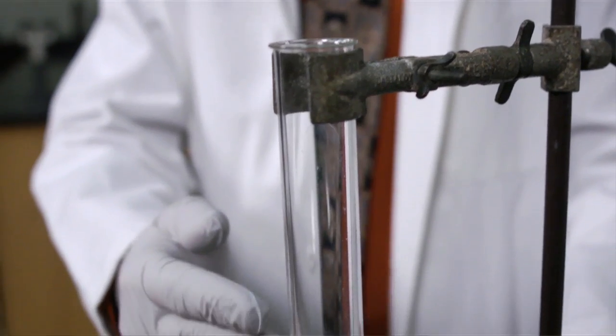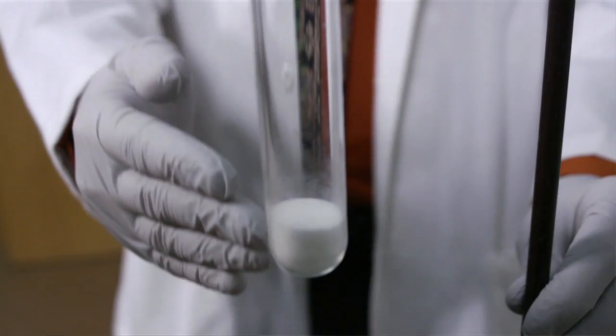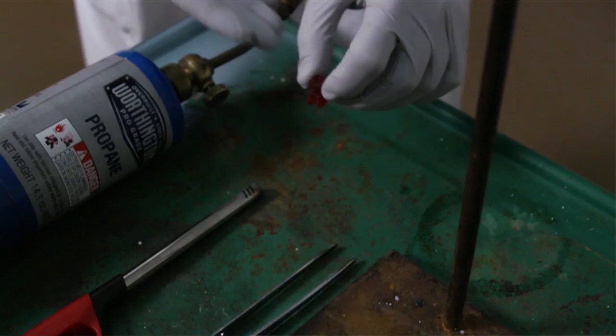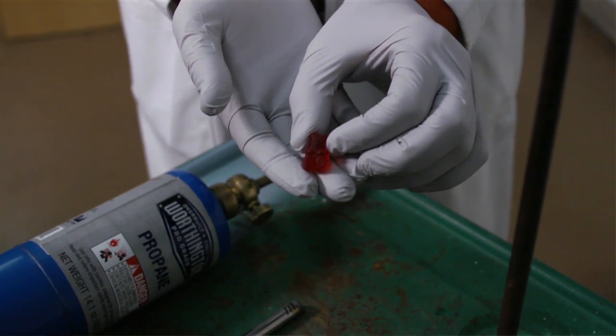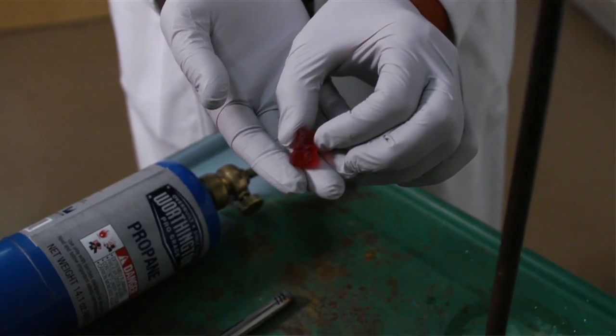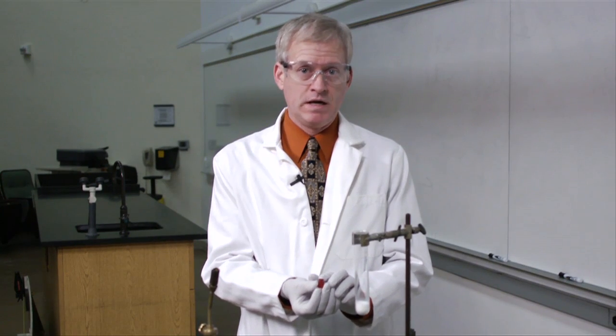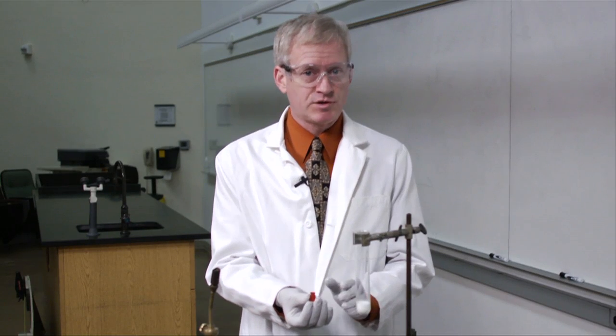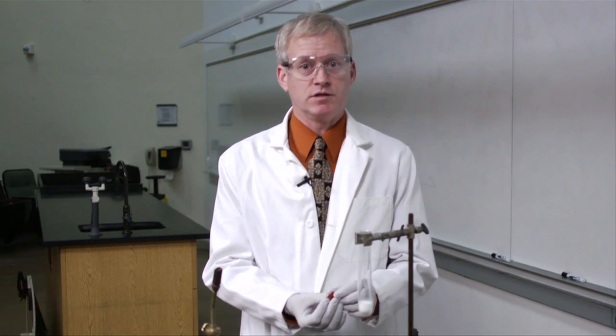In this test tube, I have some solid potassium chlorate, a strong oxidizing agent. And here, I have a gummy bear, a piece of candy that is essentially a mixture of sugar, starch, and gelatin. All of these are organic compounds that can be burned exothermically by a strong oxidizing agent.